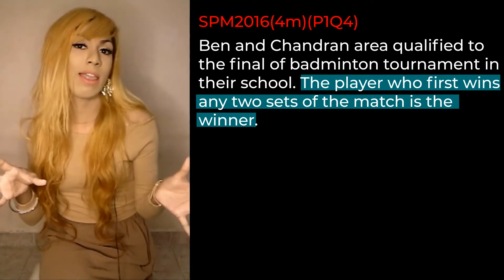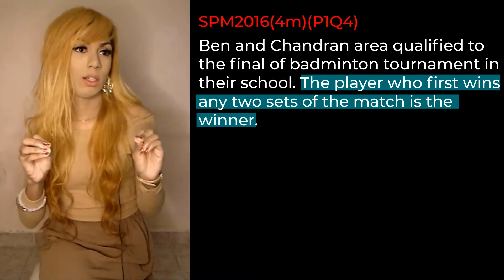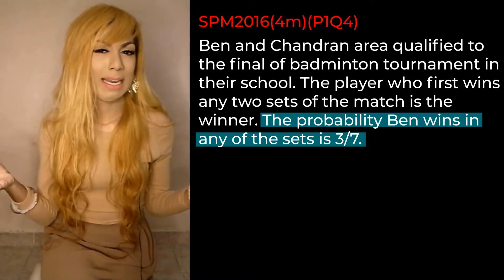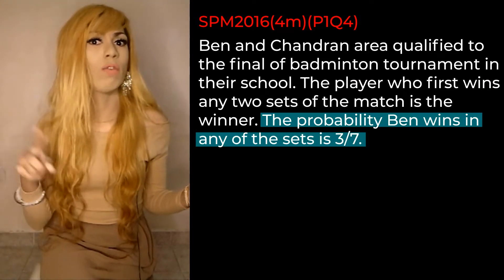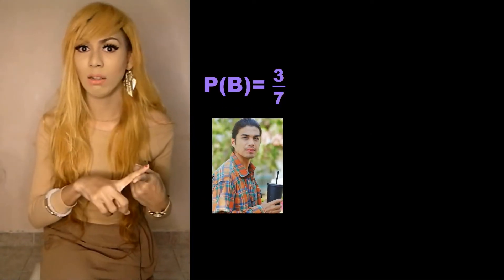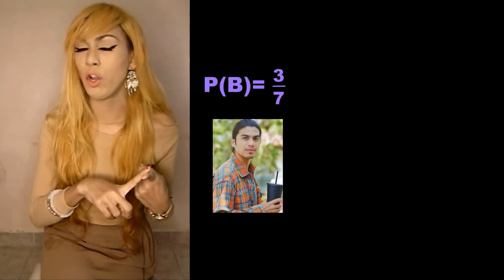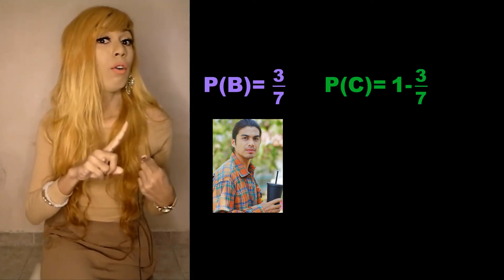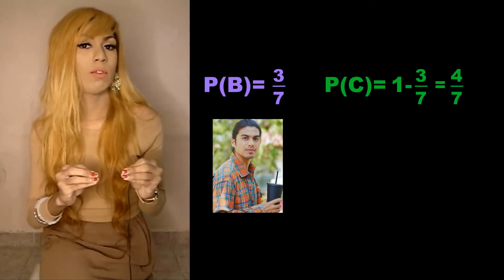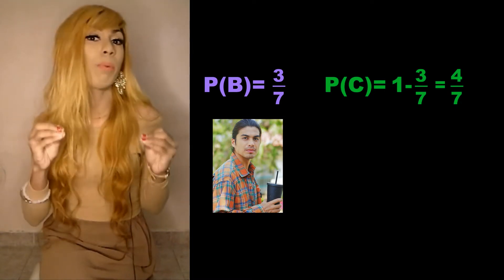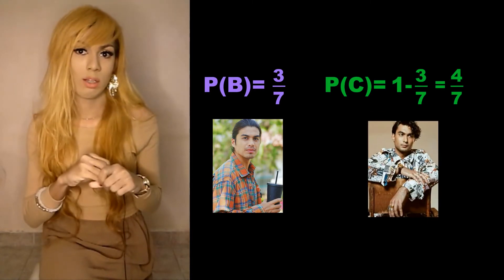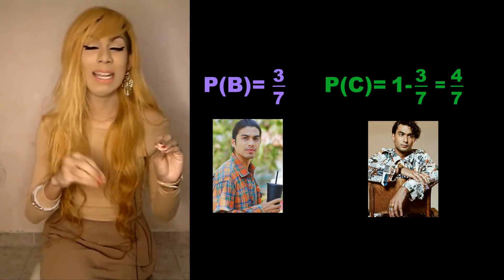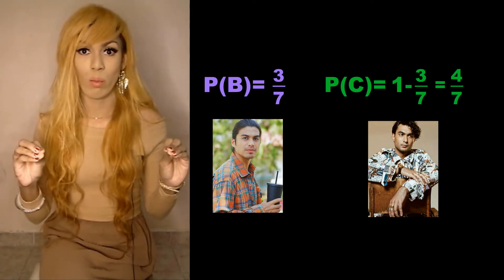The probability that Ben will win in any set is 3 over 7. So which means if the probability for Ben to win is 3 over 7, we take 1 minus 3 over 7 and we will have 4 over 7. So this 4 over 7 is actually the probability for Chandran to win.